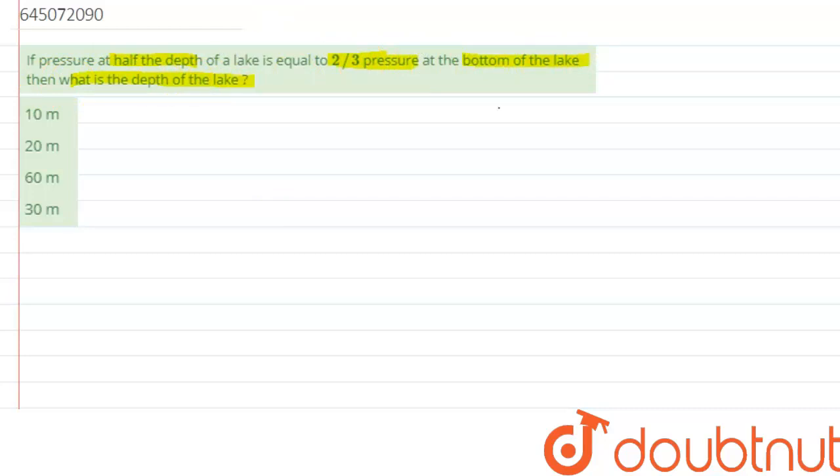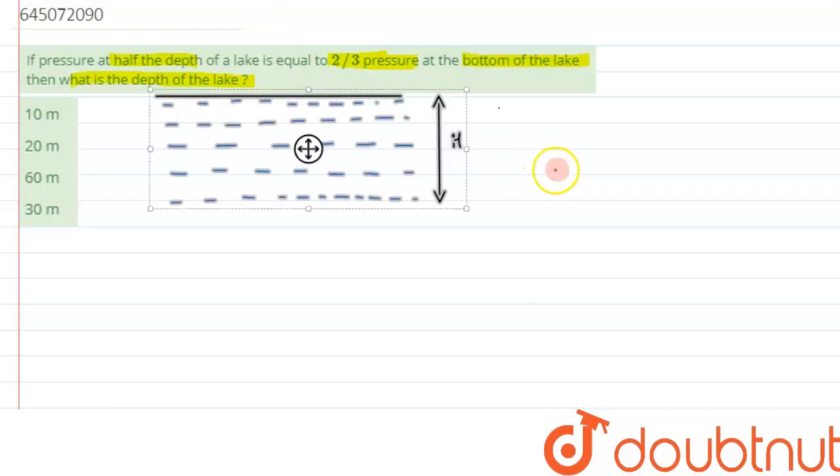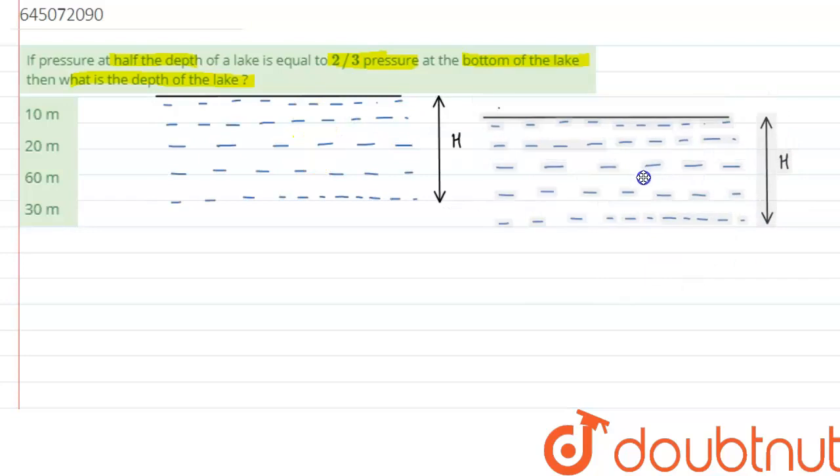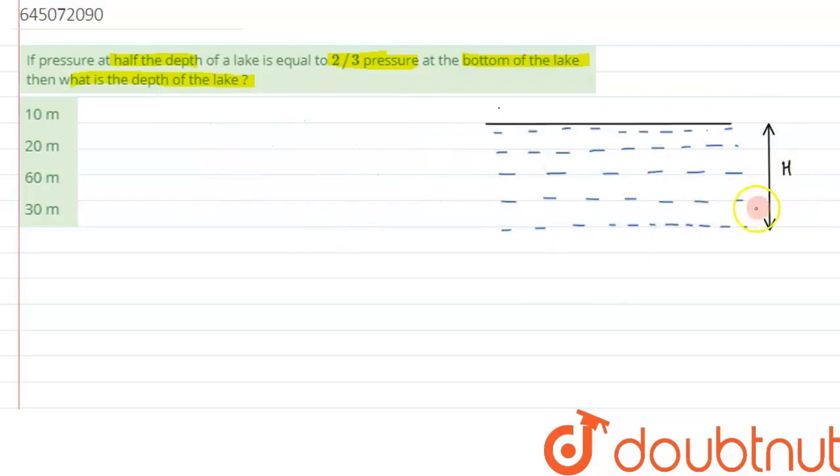Let's try to visualize the condition. Assume that there is a lake of depth capital H. On its free surface, we know atmospheric pressure P₀ is acting.